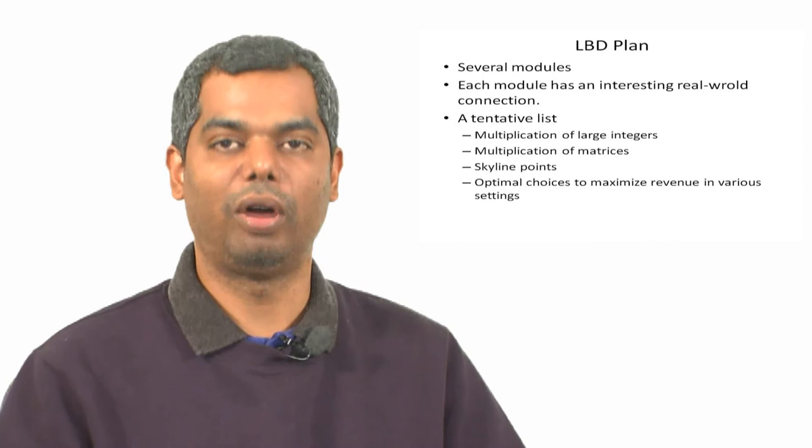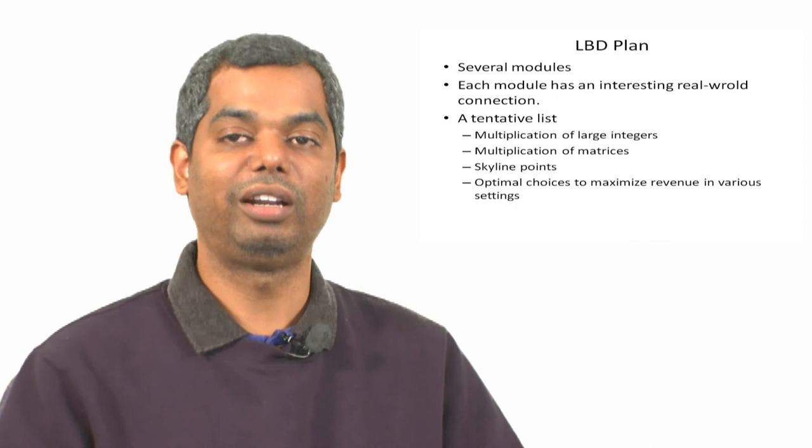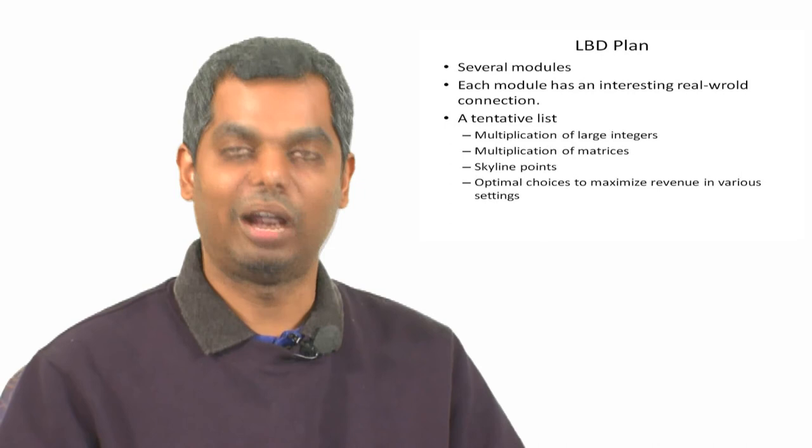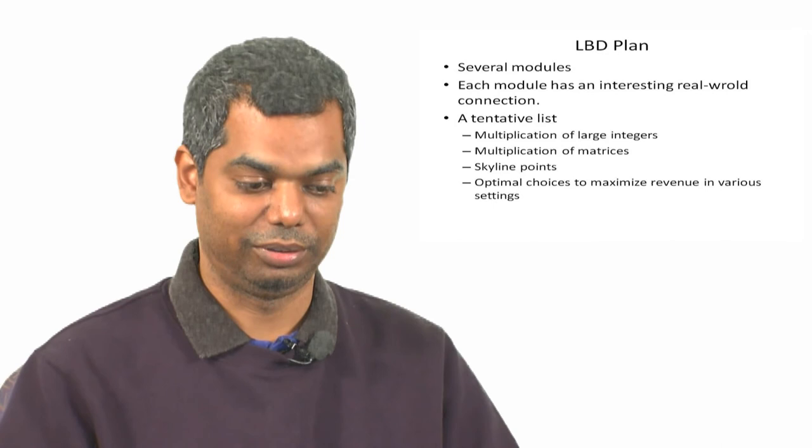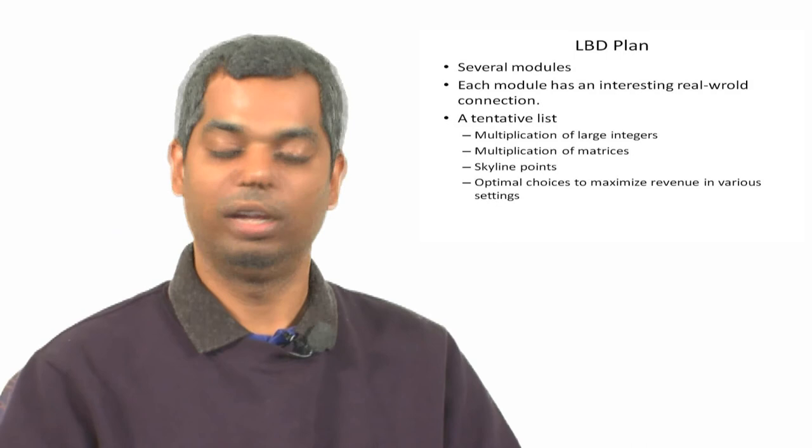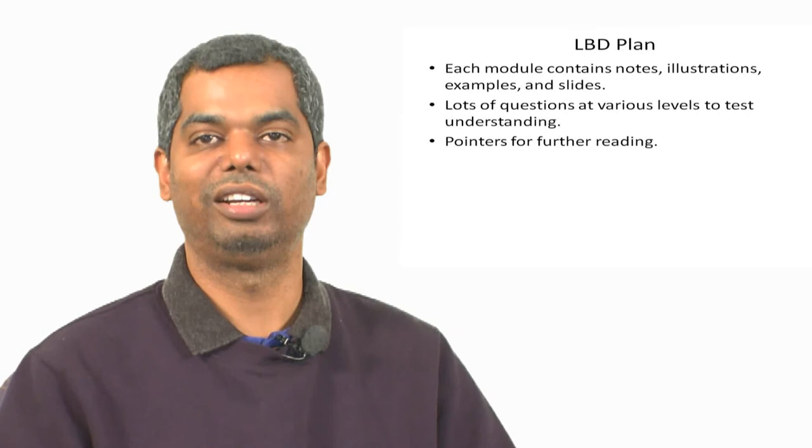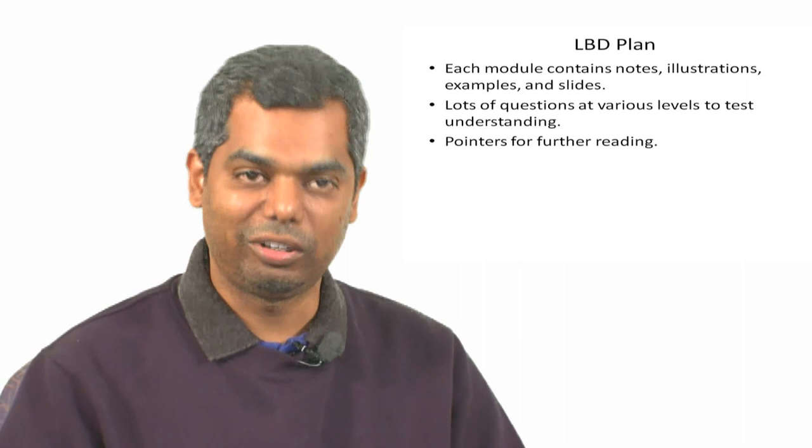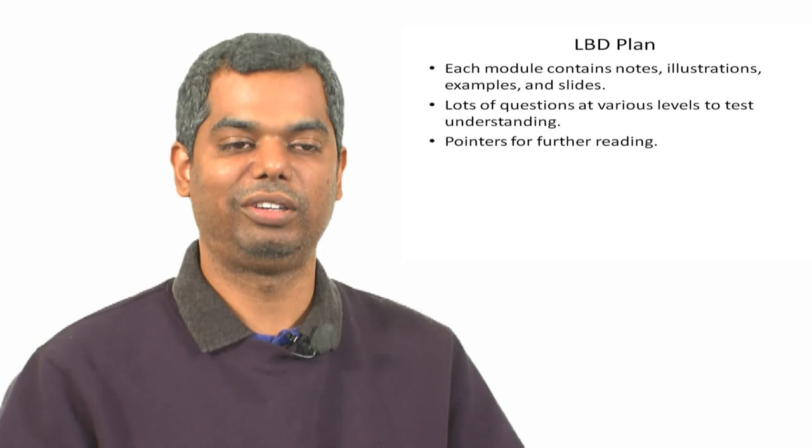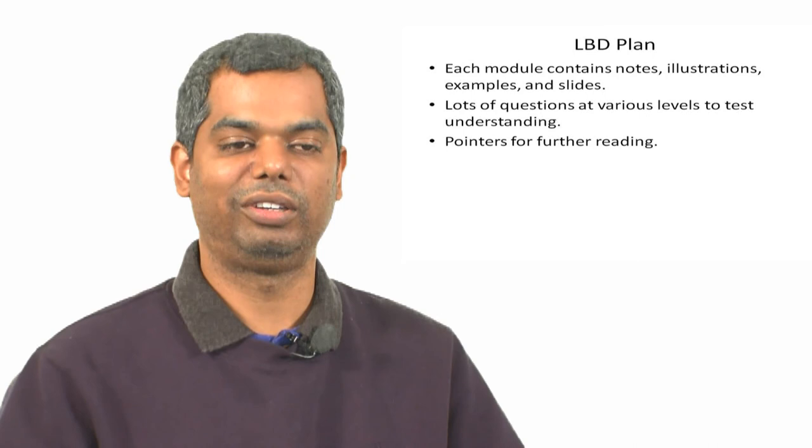Then we will try to move up the scale, try to define what is known as the skyline points in a 2D point set, understand applications where these points are of interest, and also design an algorithm using the divide and conquer approach to come up with a solution to finding the skyline points in a given 2D set. These are example problems, and we will try to include several supporting materials such as notes, illustrations, slides, examples, and question banks and pointers for further reading. So all in all, this should give you a very comprehensive experience to understand the algorithms behind the examples that we talk about. That is a basic motivation to why we should study algorithms.